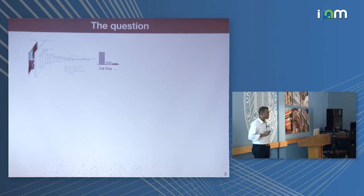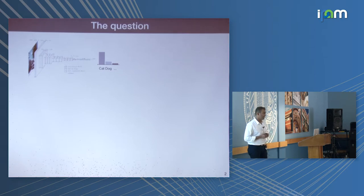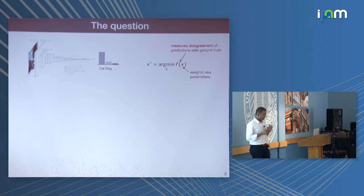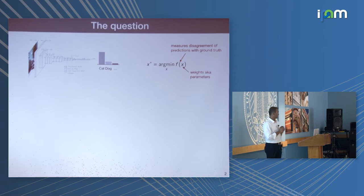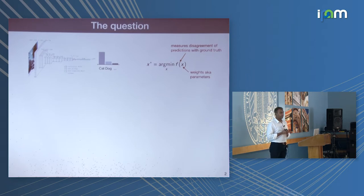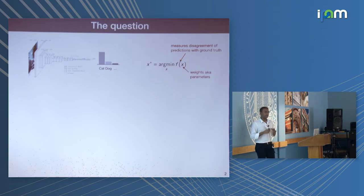We all know what convolutional neural networks are. They are essentially nested compositions of affine functions. You plug in an image from the left and get some probability vector of class conditionals on the right. For this talk, I'll abstract the training of a neural network as an optimization problem: x* = argmin f(x), where x are the parameters — the weights of the neural network — and f(x) is the loss function. f(x) is a non-convex function in x. It is the average misprediction error over your entire dataset with respect to the ground-truth labels.